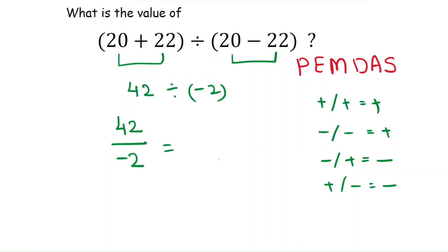So here we have +42 ÷ (-2), which will give a minus sign. 21 times 2 is 42, so minus 21 is the answer.